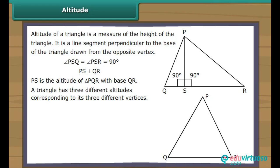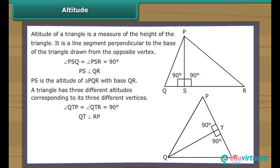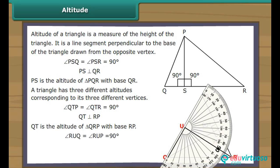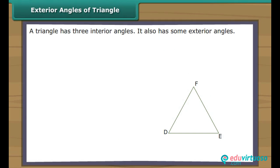A triangle has three different altitudes corresponding to its three different vertices. We draw a line segment from Q perpendicular to RP at point T. It intersects RP at right angles. Therefore, QT is the altitude of triangle QRP with base RP. We draw another line segment from R perpendicular to PQ at point U. It intersects PQ at right angles. Therefore, RU is the altitude of triangle RPQ with base PQ.